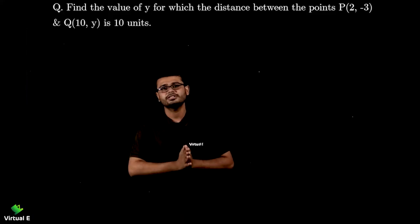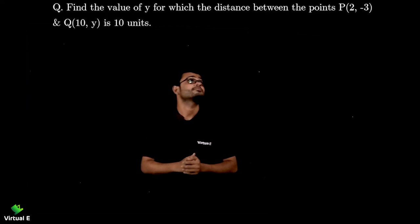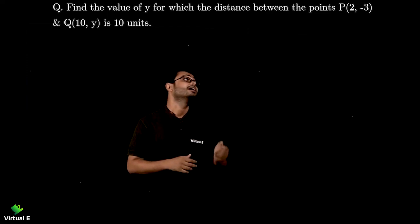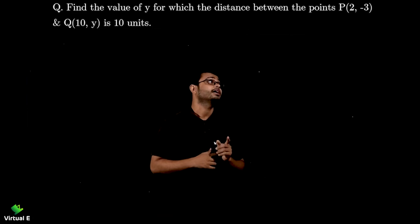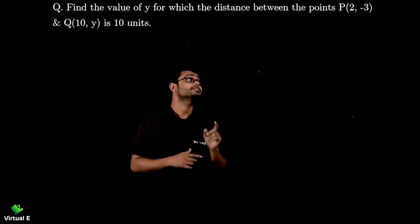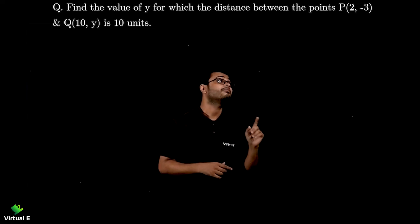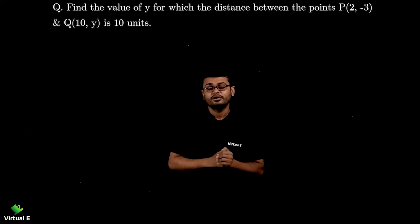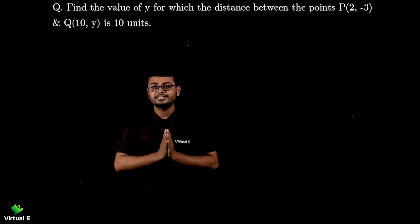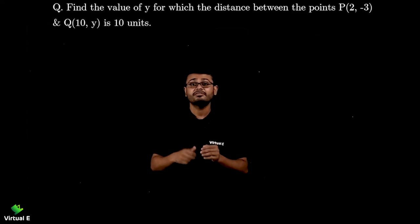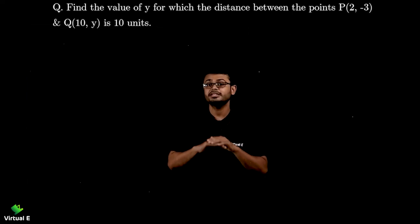Let's discuss one more question for the formula of distance. Let's read the question first. Find the value of y for which the distance between the points P and Q is 10 units. So in this question distance is already given which we were finding so far. Distance is already given.